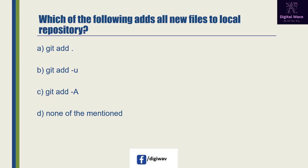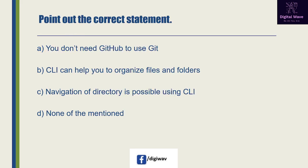Which of the following adds all new files to the local repository? Option A is 'git add', option B is 'git add -u', option C is 'git add -a', and the last option is none of the mentioned. The right answer will be A: git add.